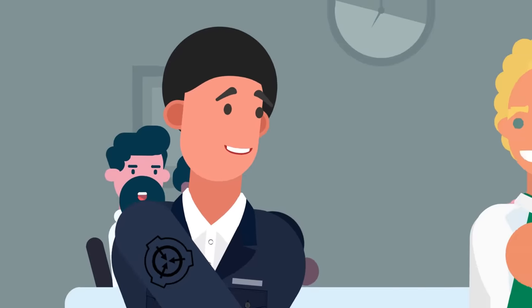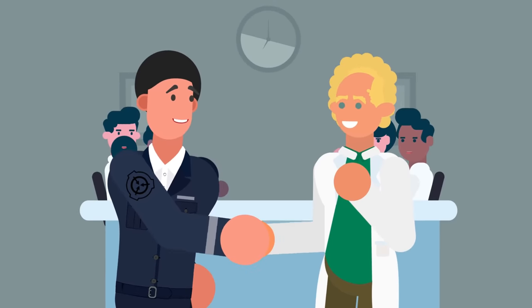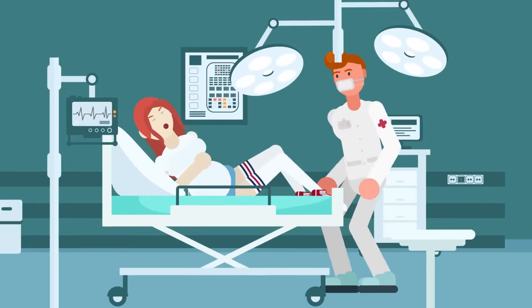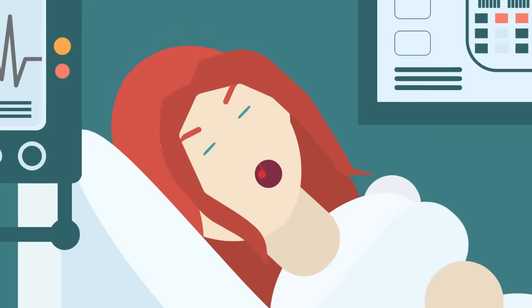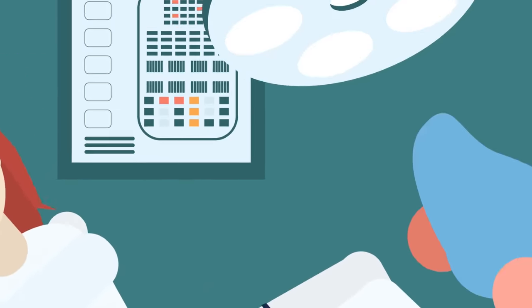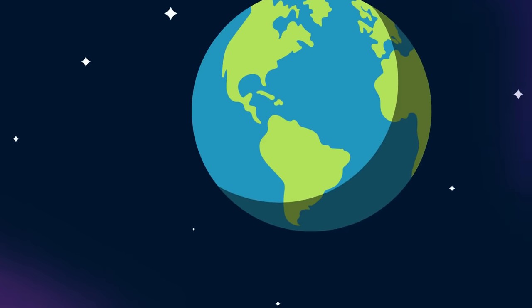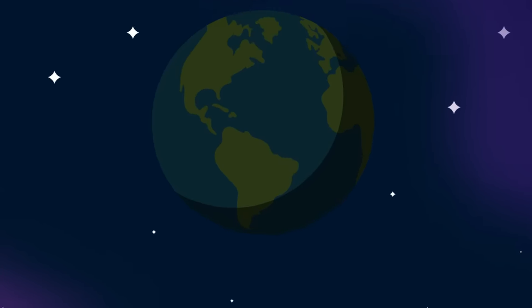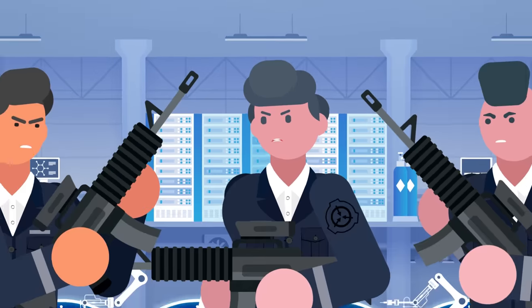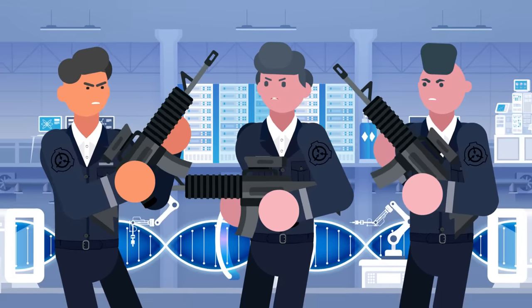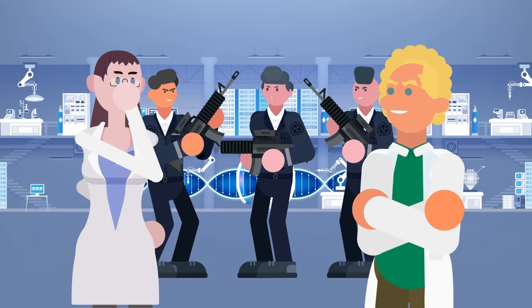Because if they ever stop their brutal treatment of SCP-231-7, a treatment codenamed Procedure 110 Montauk, she'll give birth to a creature that will destroy the world as we know it. This is just one of the many examples of the objects and entities under the watchful eyes of the SCP Foundation, a mysterious group that strives to achieve greater good by any means necessary, and we do mean any.